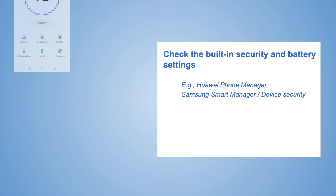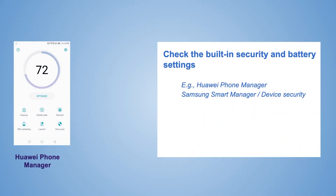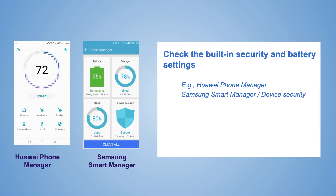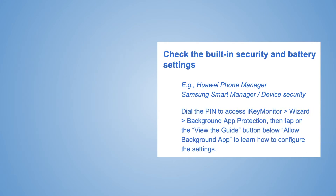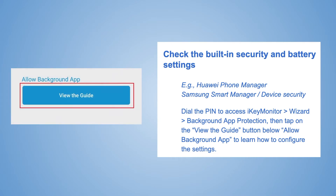Check the built-in security and battery settings. For instance, Huawei Phone Manager and Samsung Smart Manager device security. Get the target phone in hand, dial the PIN to access iKey Monitor, tap on Wizard, and move to 'Background App Protection.'